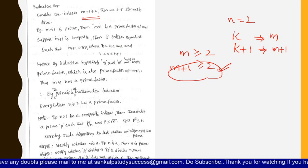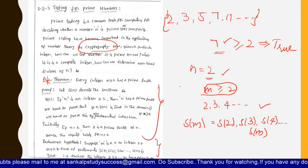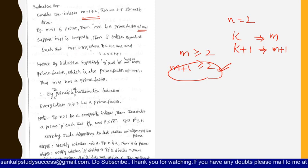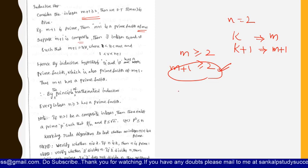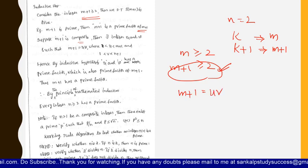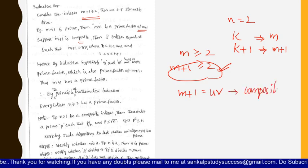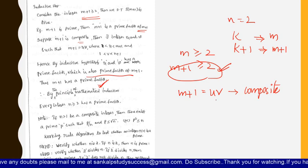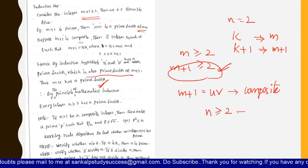If m plus 1 is prime, then m plus 1 is a prime factor of m plus 1 — just as when n equals 2, 2 is a prime factor of 2. If m plus 1 is a composite number, then it will have prime factors u and v such that m plus 1 equals u times v. So by the inductive hypothesis, the prime factor of u is also a prime factor of m plus 1. Therefore, m plus 1 has a prime factor, meaning any number greater than or equal to 2 will have prime factors.